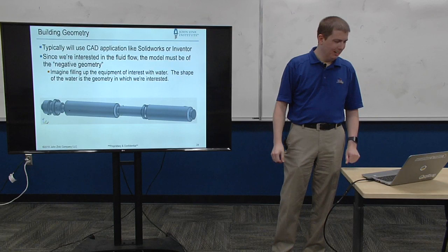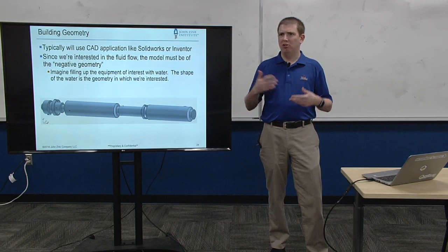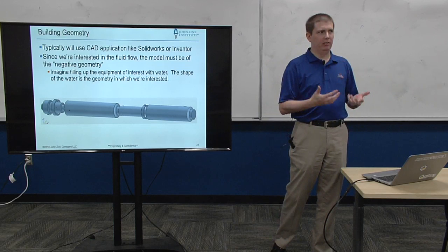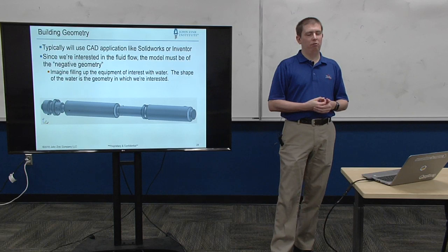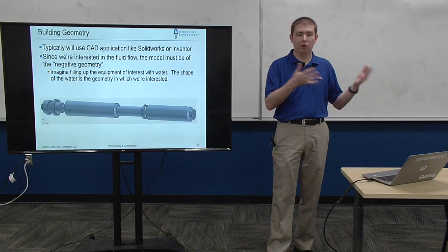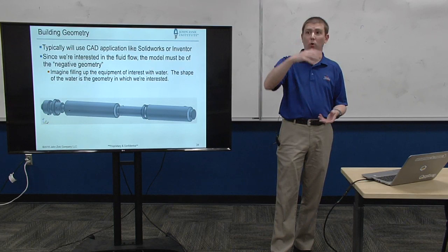So geometry, typically you're going to use something out of like SolidWorks or Inventor or another kind of 3D CAD product. And then, like I mentioned, the geometry that CFD is interested in is the negative geometry. So a lot of times you'll get the geometry from a drafter or a design group. But that's going to be the positive geometry. So you have to take that and convert it into the negative geometry. So basically, you have to fill it up with water and figure out what shape the water would be.